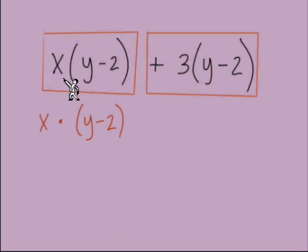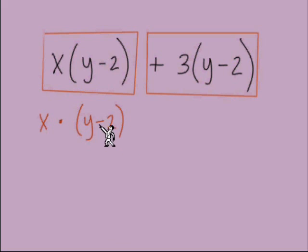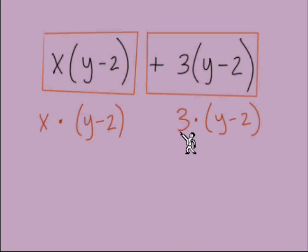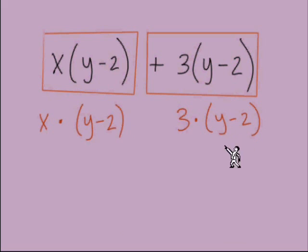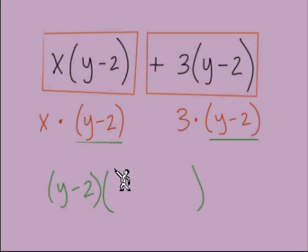So we have really just two big terms here, and we're thinking about what is a common factor. In the first term we have two factors: x is the first factor, and (y minus 2) in parentheses is the second factor. When it's in parentheses, we think of it as just one factor — a building block. We're not going to try to separate the y and the negative 2. The second term also has two factors: a positive 3, and the quantity (y minus 2). So there is a common factor: the quantity (y minus 2) — that's our GCF.